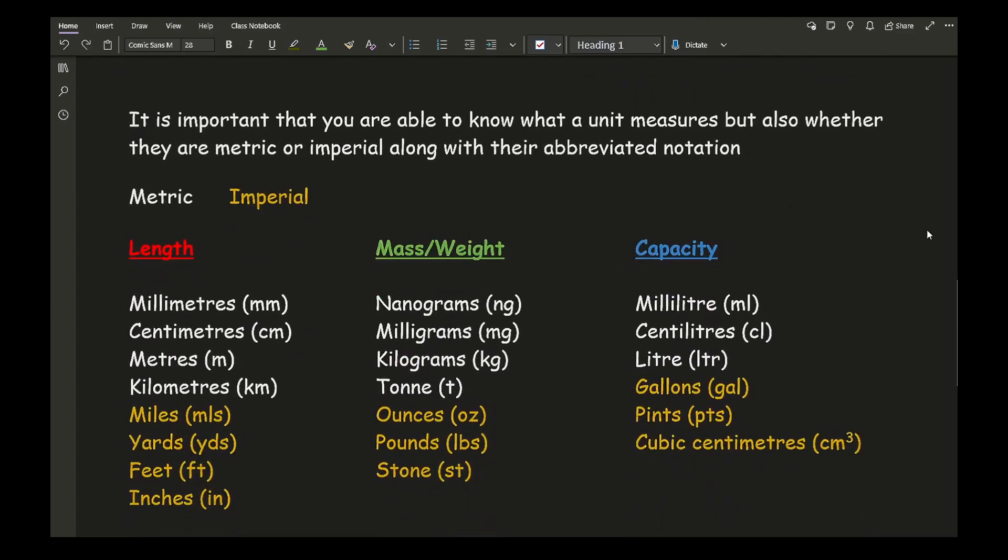Let's look at the types of units. It is important that you're able to know what a unit measures, but also whether they are metric or imperial along with their abbreviated notation. In this list, we've got the three main areas: length, mass and weight, and capacity. The things written in white are what we class as being metric, and the things written in yellow are what we class as imperial units.